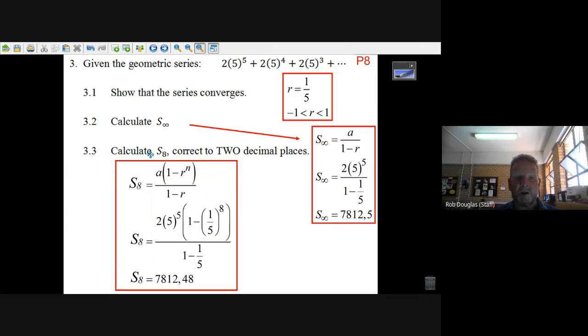What if they said calculate the first eight terms, S₈, correct to two decimal places? We put in the same a, 2(5^5), here's the formula 1 - r^n, so (1/5)^8, over 1 - r. I press equals on the calculator and I almost get the same answer: 7812.48 instead of 7812.50.